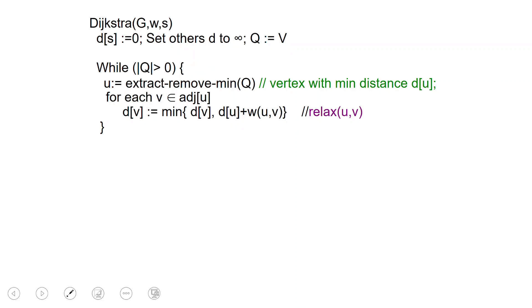We start by setting the distance of S to zero and all the other's distances to infinity. And here we begin by initializing Q to V, all the nodes in the graph, and this Q will be a priority queue with respect to this distance function D.